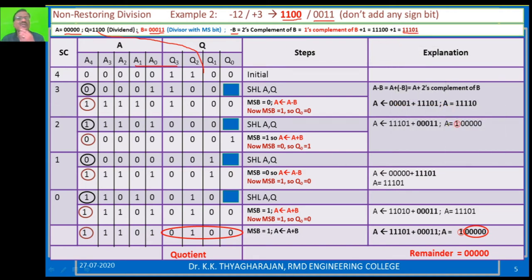A register is initialized with five 0s. This is the initial step. Now you are decrementing the step counter. The procedure is: as we did in the previous problem, you have to shift left. After shifting left, the bits move over and the rightmost place is blank. Now you check the MSB. MSB is 0, so you have to perform A minus B.